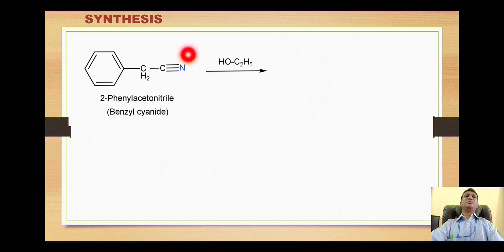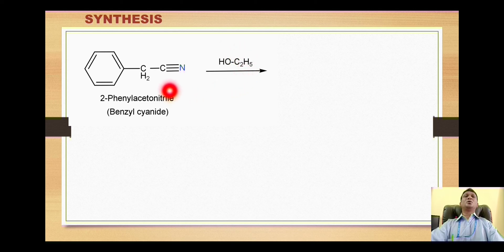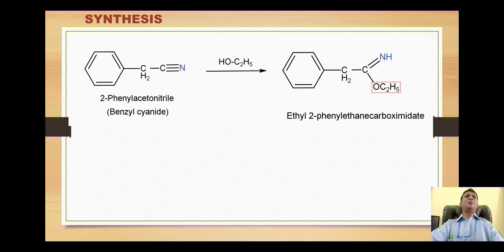Ethanol is acidic in nature, so it will liberate the H+ ion which will move to this nitrogen, which is a nucleophile. This ethoxide acid group C2H5O- will then move to this carbon.